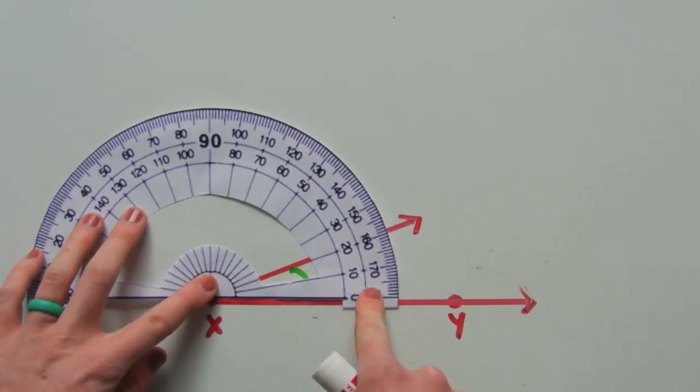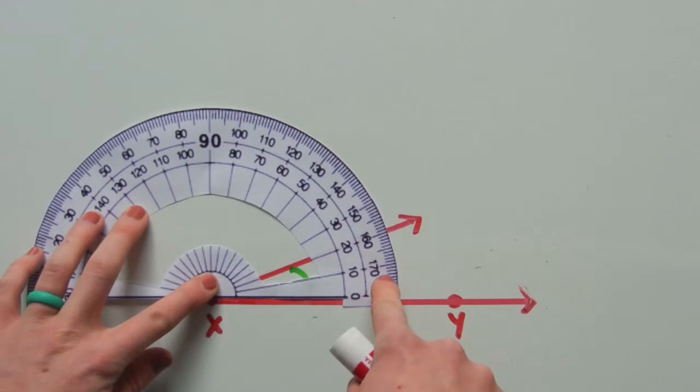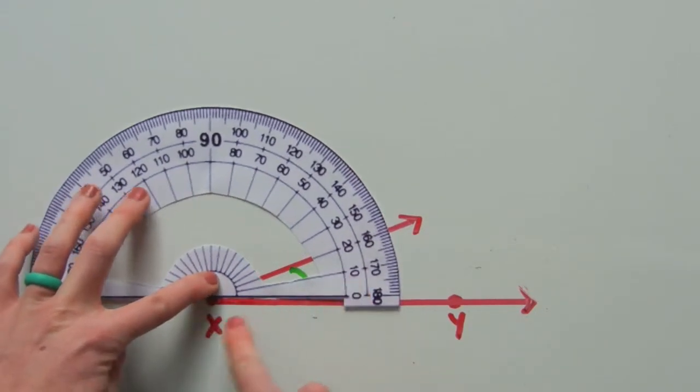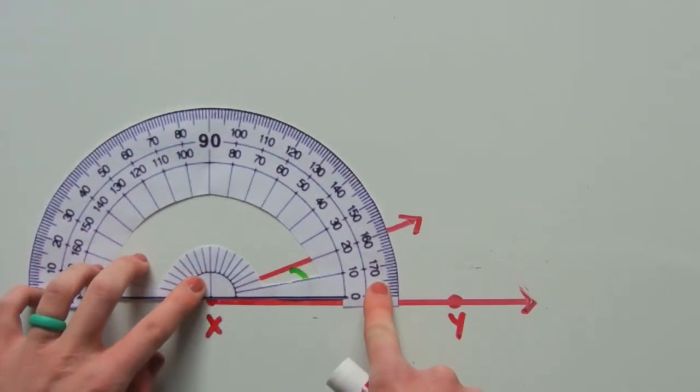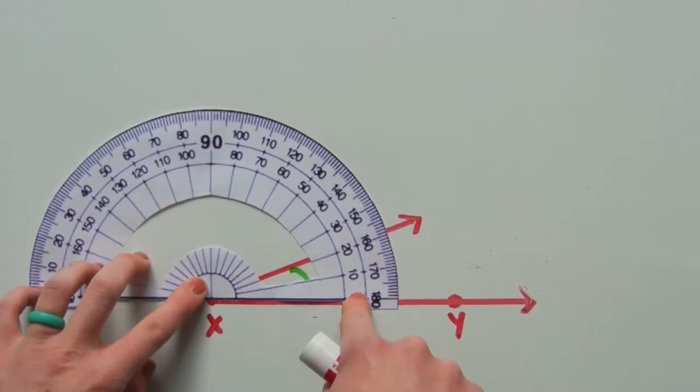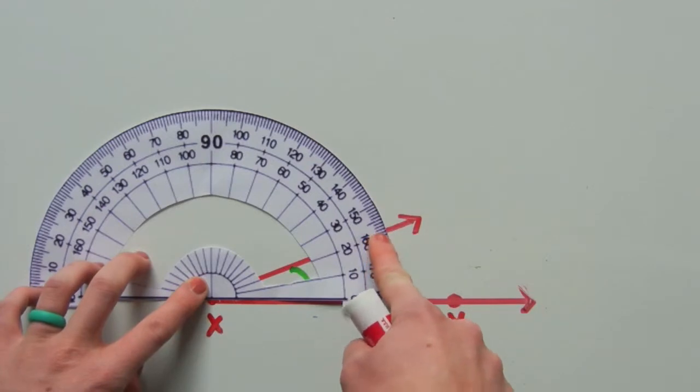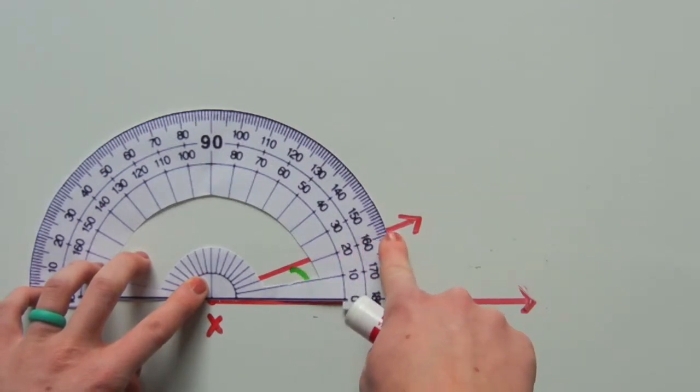Now you count around the protractor until you reach your next ray or your next side. So starting at the vertex X, you can see my tick mark is lined up and that's my center tick mark. The black horizontal line follows my ray XY, and I'm going to count up until I reach my next ray, which you can see crosses my protractor at this point.